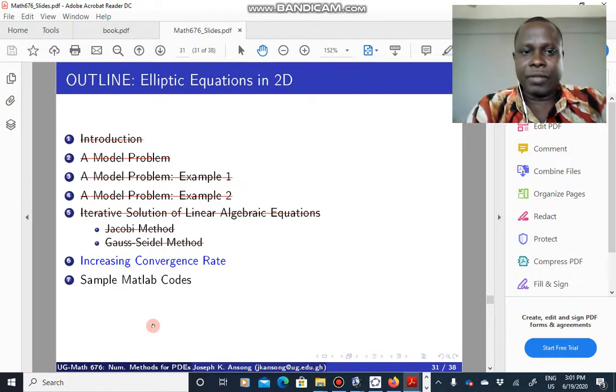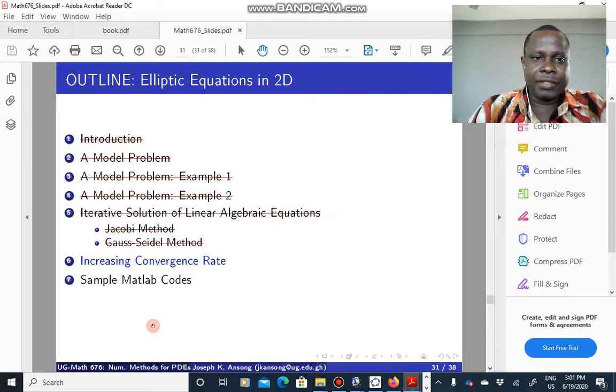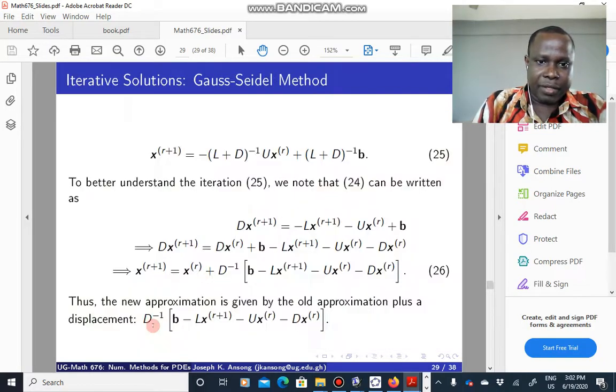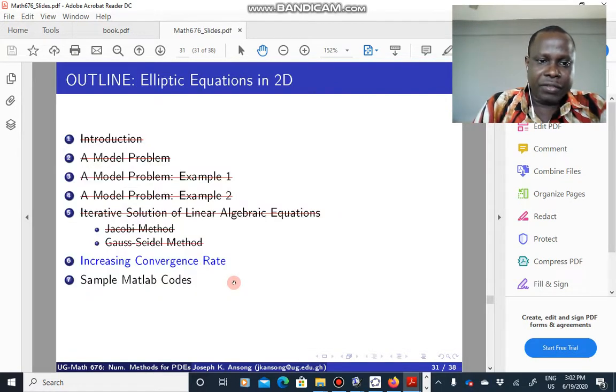Hello, so let's finish up with increasing convergence rate for solving the systems of equations. We just finished with the Gauss-Seidel method and then we came across this iteration scheme, equation 26. The next thing we are going to look at is how this is modified. Basically you multiply this by some factor to increase the convergence rate.